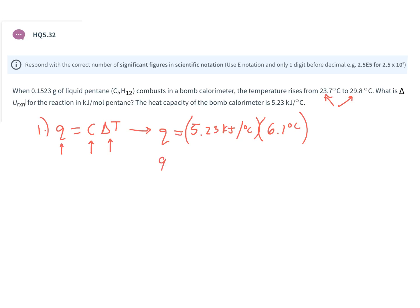So the Q of the calorimeter—the calorimeter absorbs this energy—is 31.903 kilojoules. The trick is the Q of the reaction, the combustion of pentane.